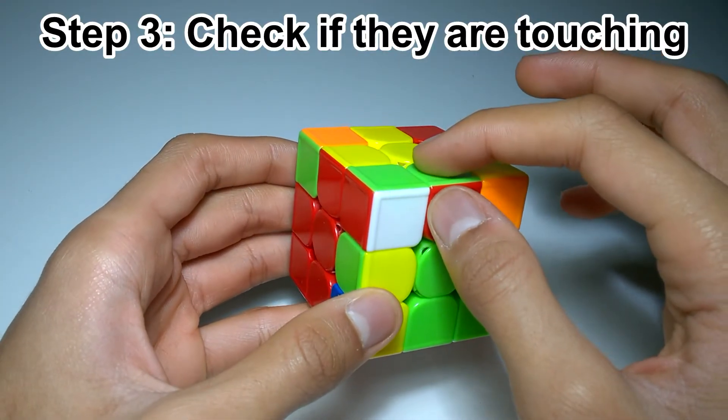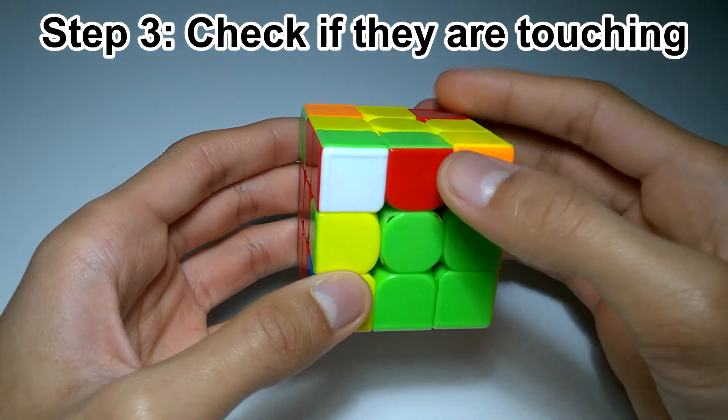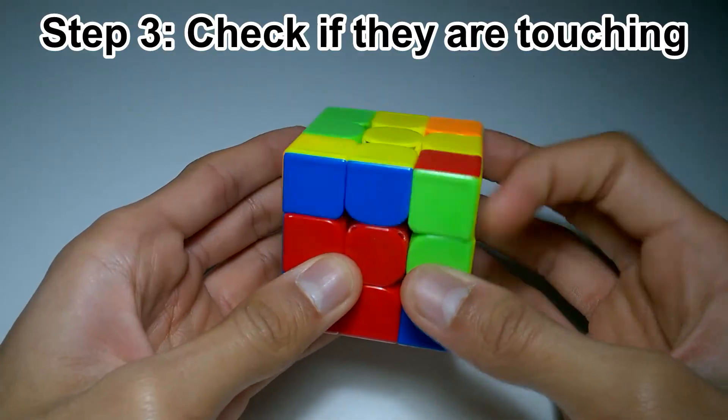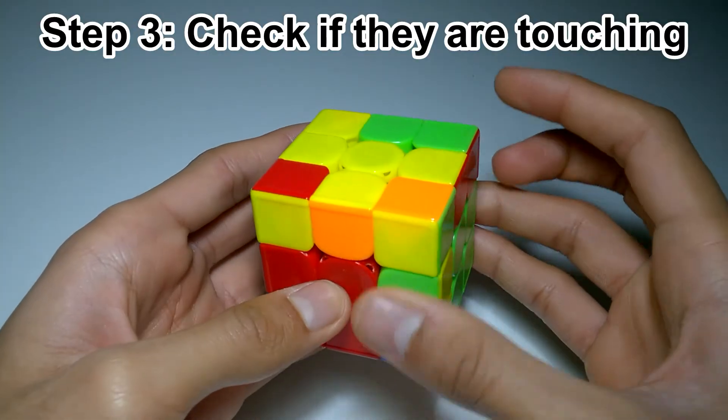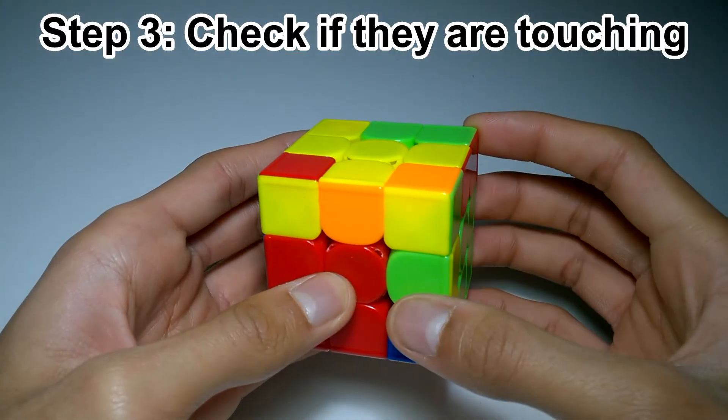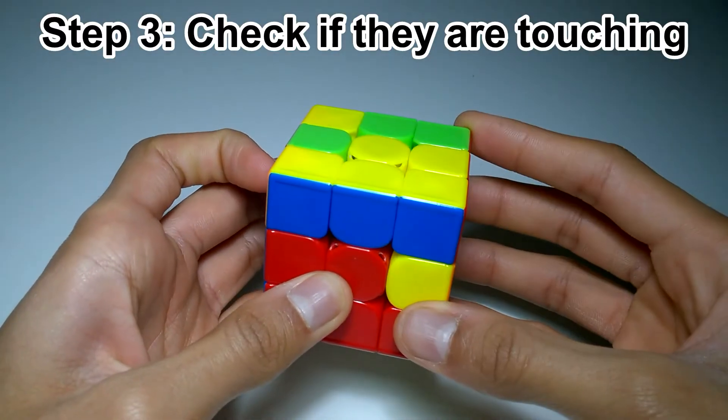If they are touching but are not paired up like this, then cube rotate so that you can match the front color of the edge with the front center. Do U2 and then one of the algorithms from before. So here, the corner is on the right-hand side, so we'll do the right-handed algorithm, which is R U' R'.